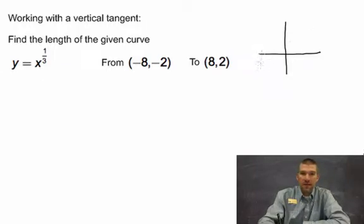We're going from negative eight, negative two, which let's just say is here, to positive eight, positive two, we'll say is here. This graph looks something like this.